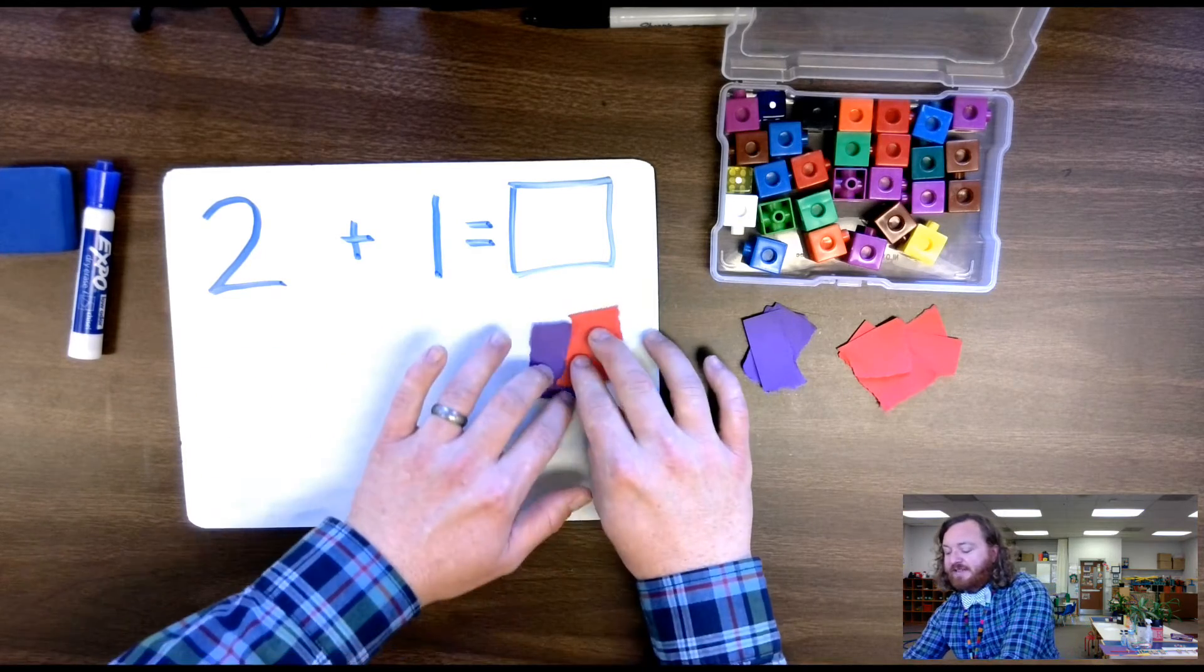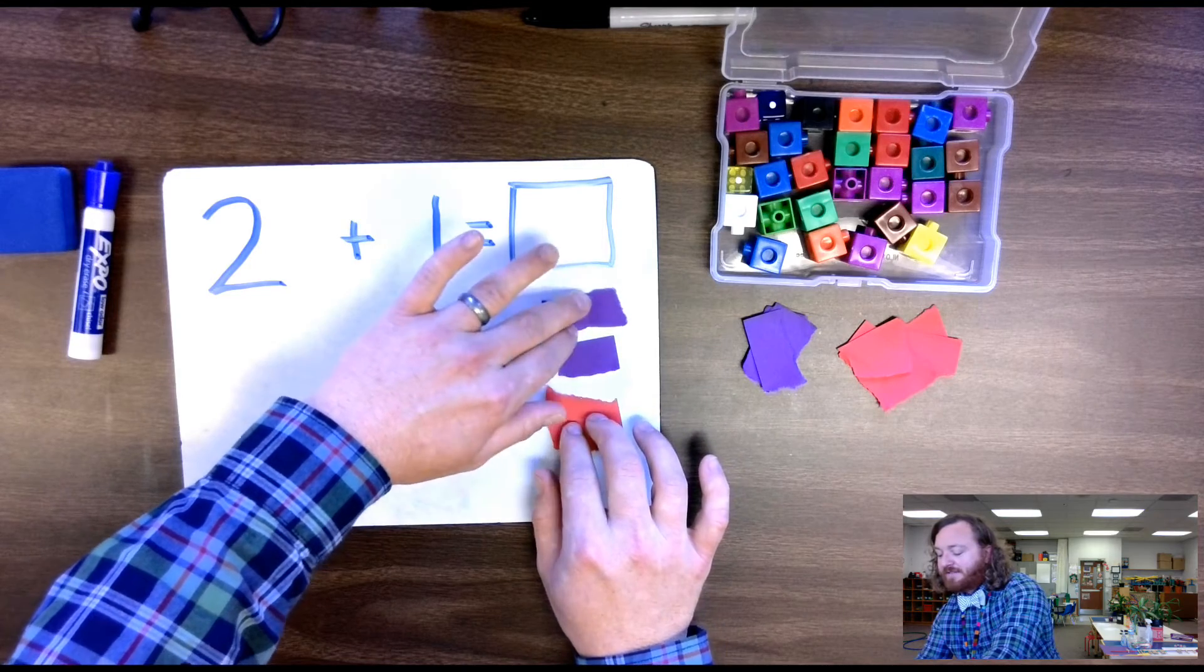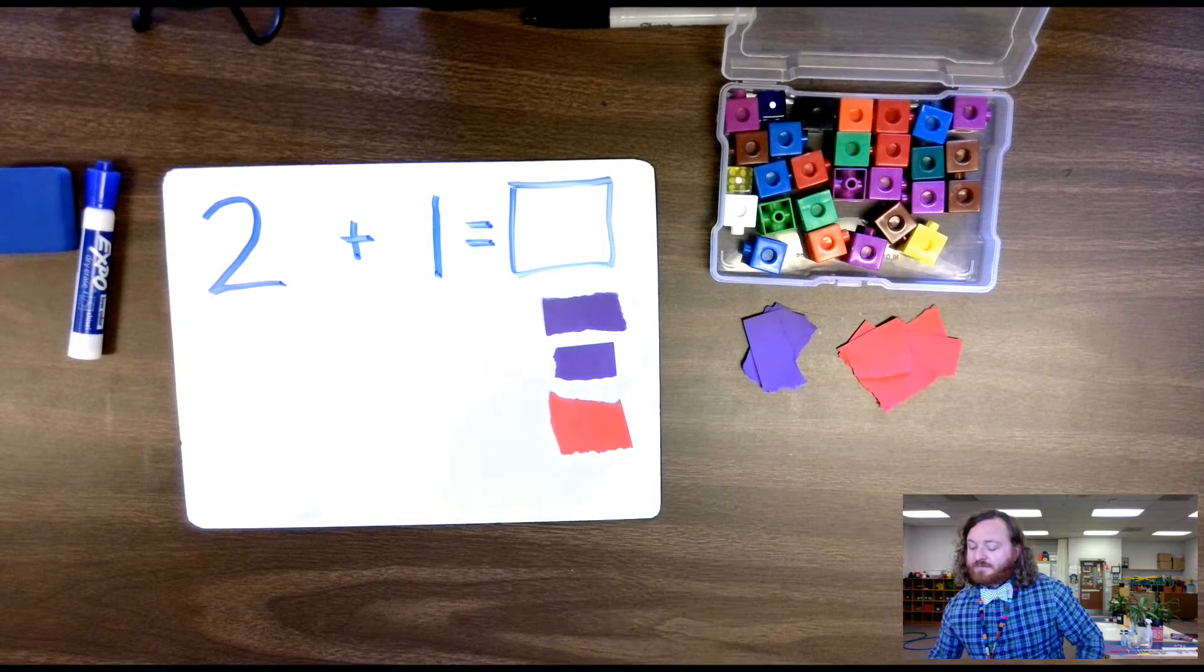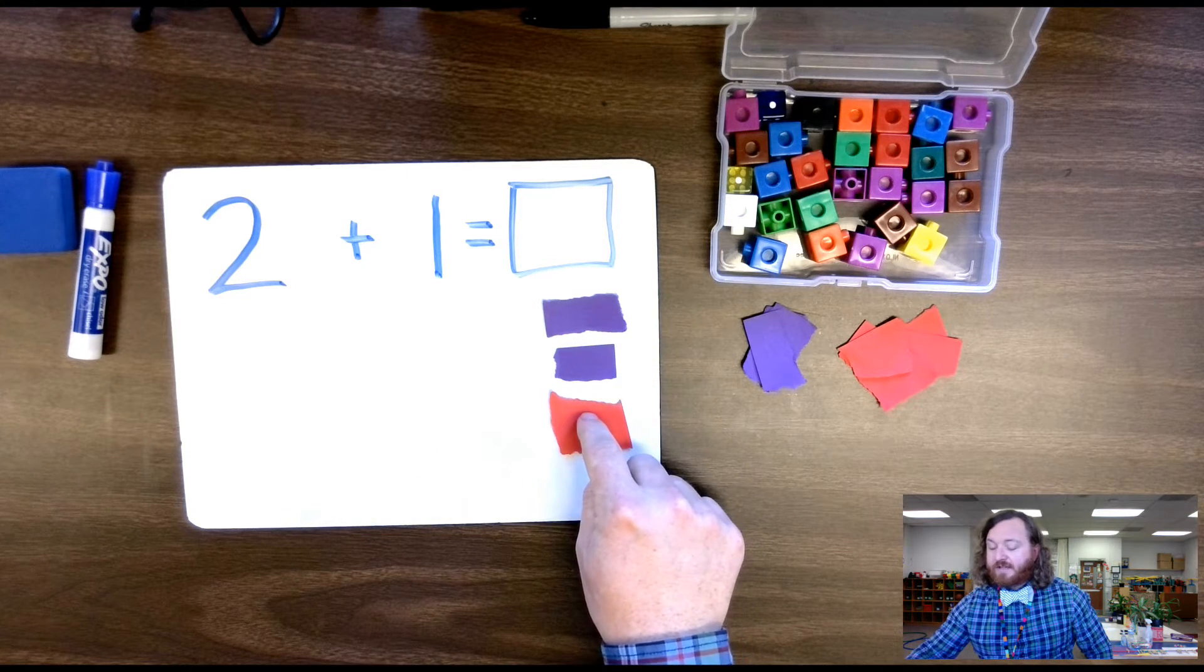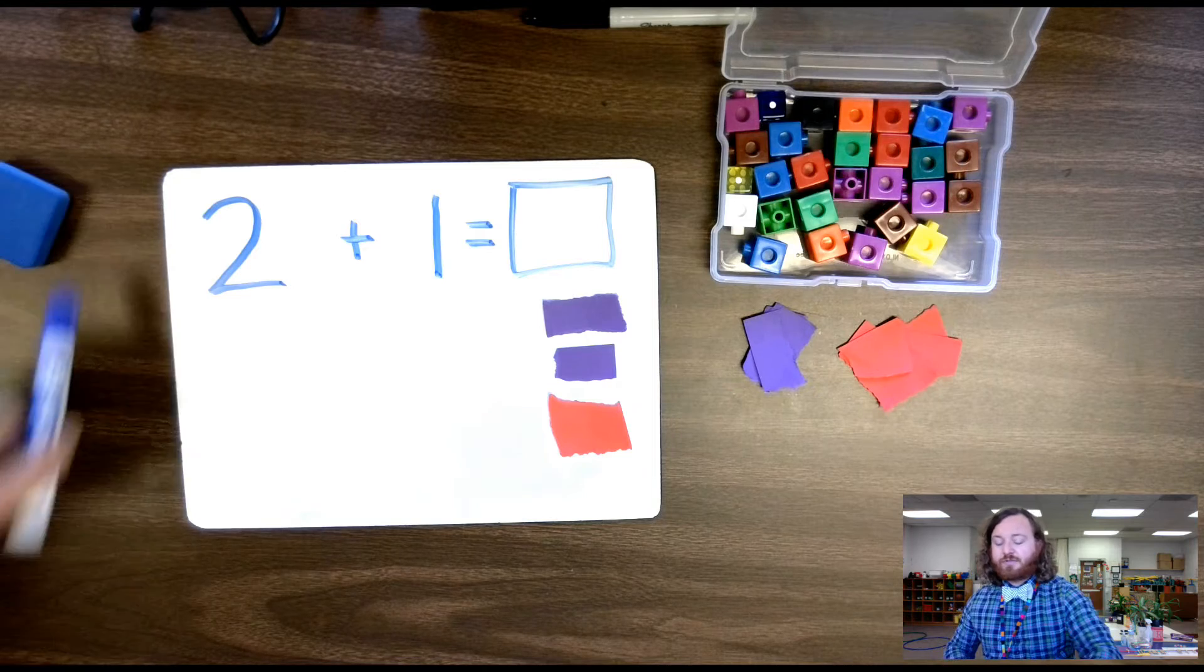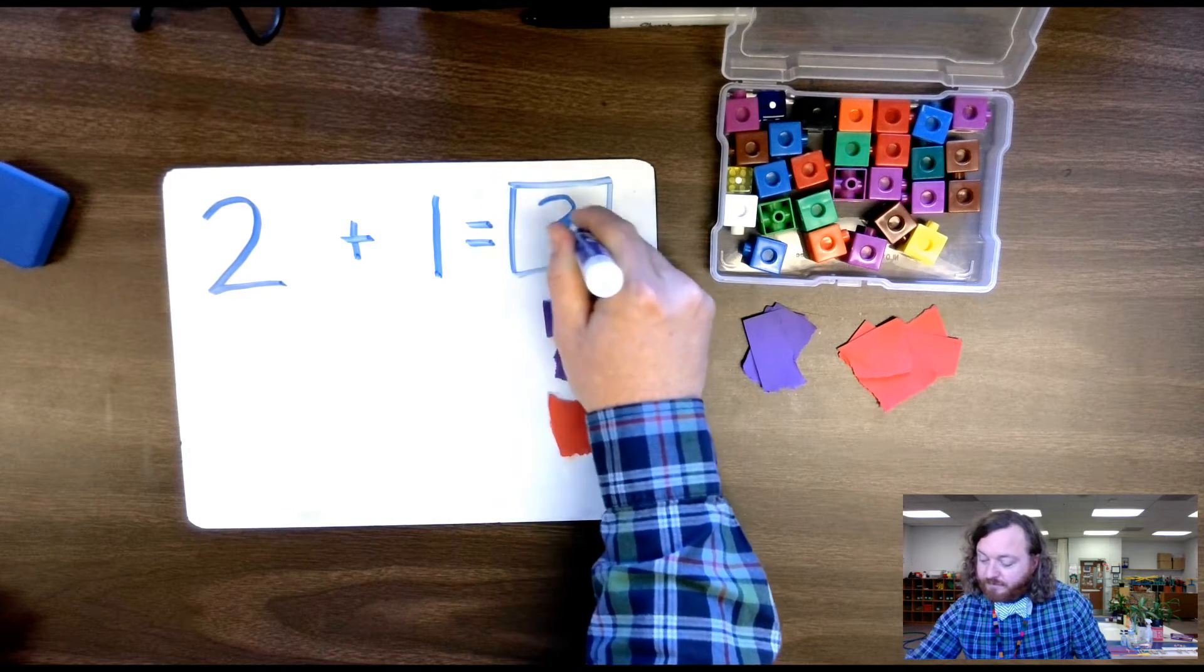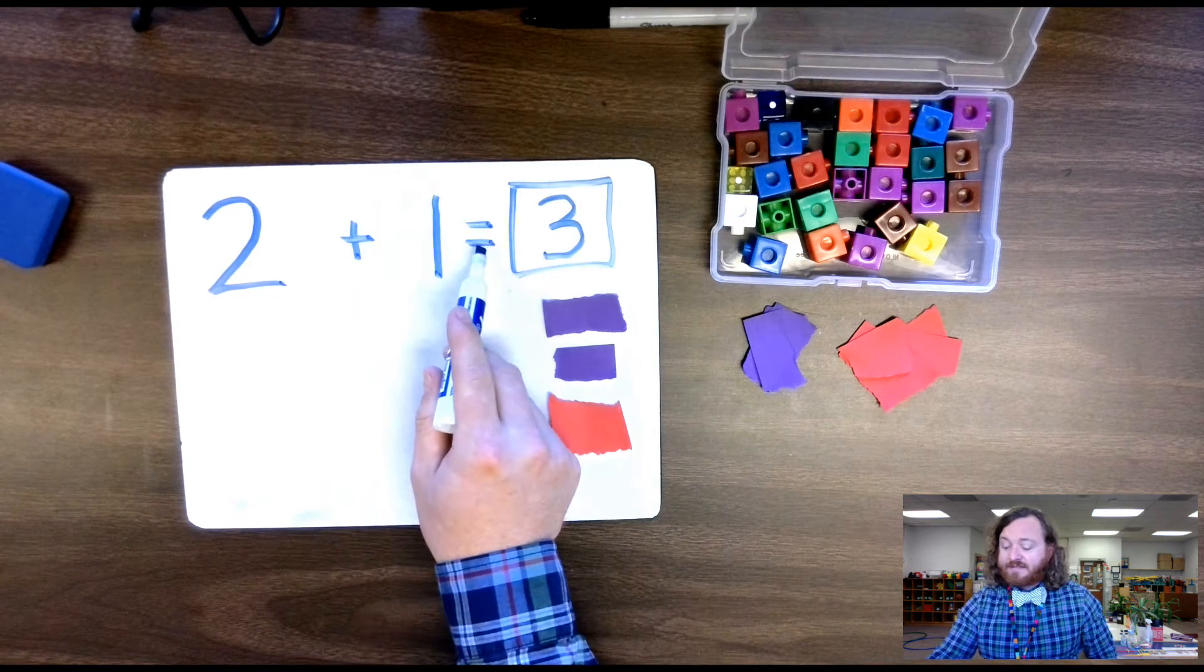So put them together. Slide them over. And I'm going to neatly put them in a row, or a column, actually. Here we have them. And now I'm going to count. One, two, three. Three. So two plus one equals three. You could also read that as two plus one is the same as three.